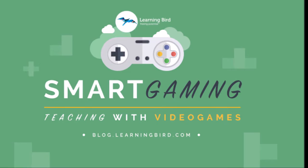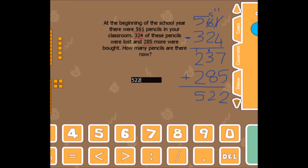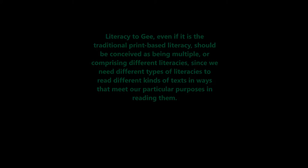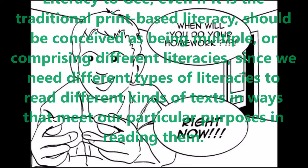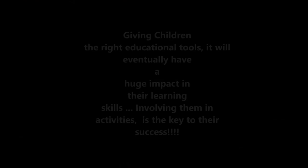Gee's video game learning theory includes his identification of 12 basic learning principles. Literacy, to Gee, should be conceived as being multiple, using different literacies to meet particular purposes in reading them.